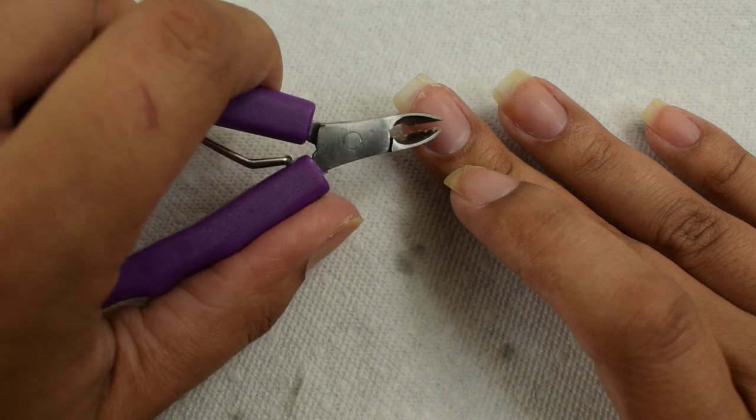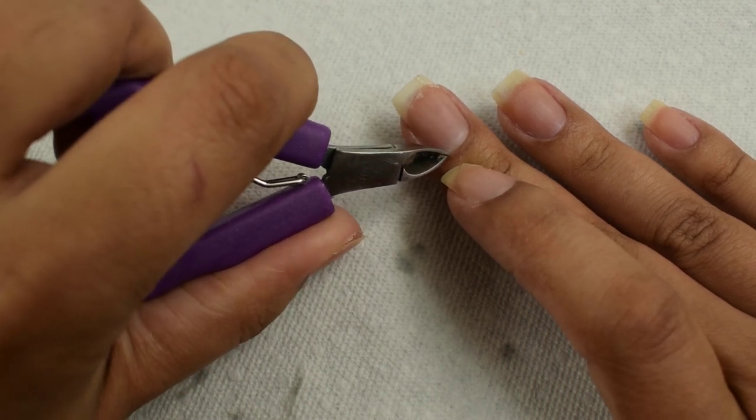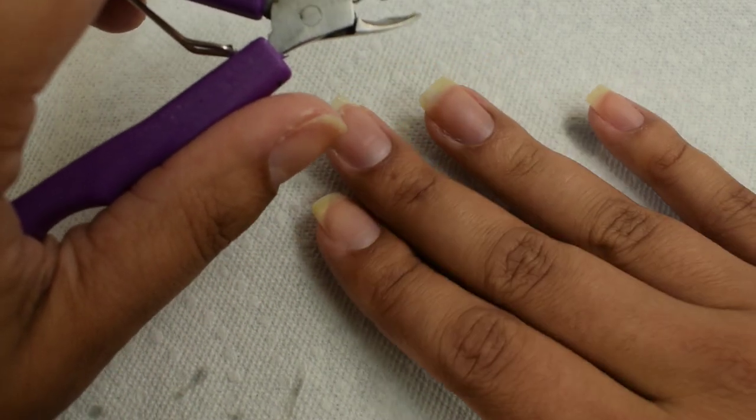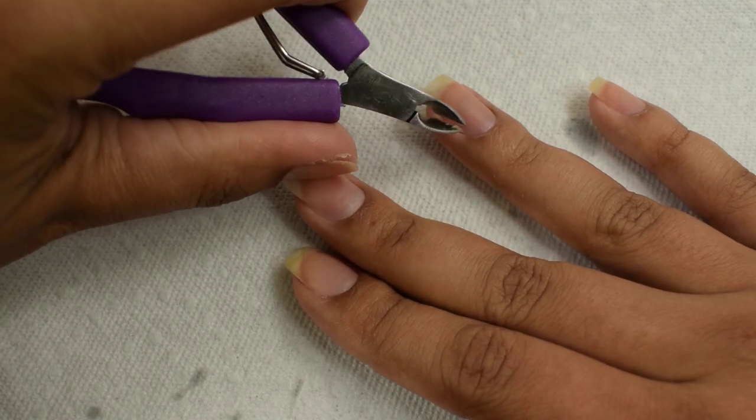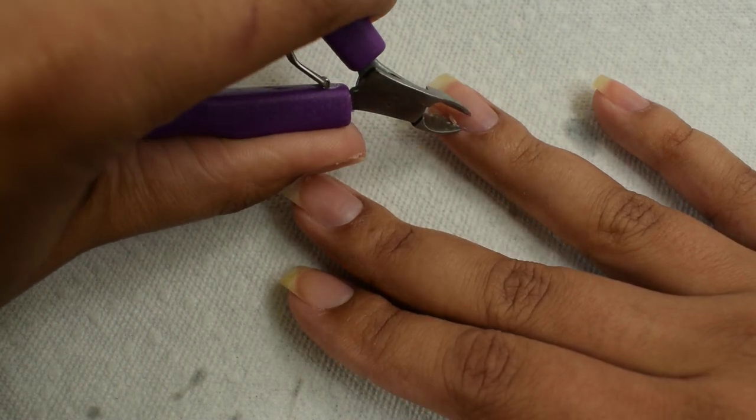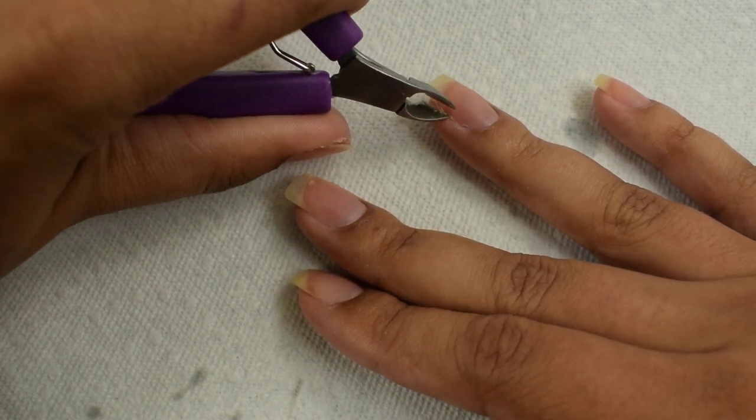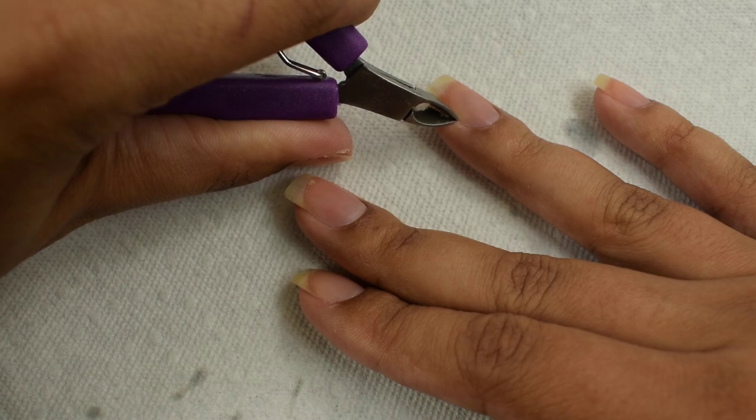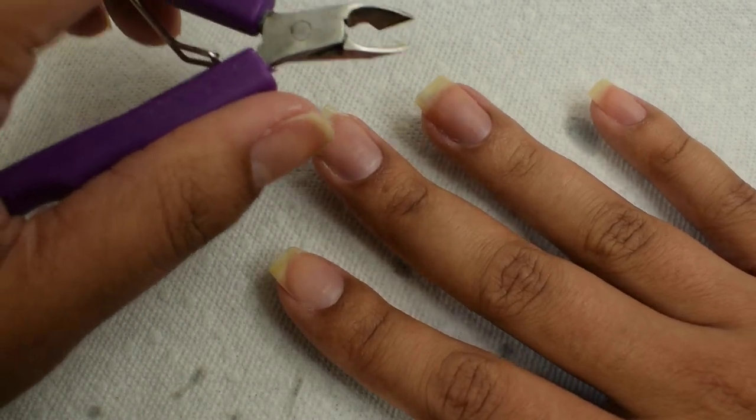If I can be cheap about something, I absolutely will. And this one, if I'm not mistaken, came from Dollar Tree and it has served me very well. I think I've been using this for about a year and a half now. And I just go in and clip off any excess skin that's hanging off after the remover.